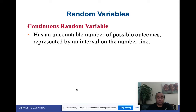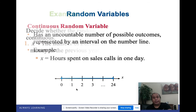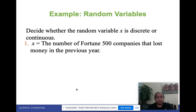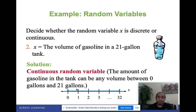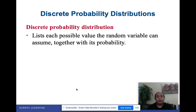A continuous random variable can take on decimal values. For example, is the number of Fortune 500 companies that lost money in the previous year discrete or continuous? Companies cannot take decimal values, so this only takes exact values — telling us it's a discrete variable. The next example: the volume of gasoline in a 21-gallon tank. Volume can take decimal values, so this is an example of a continuous random variable.